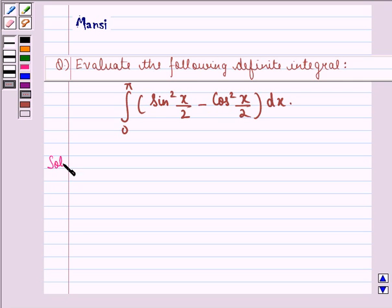So, let us start with the solution to this question. We see that the integral given to us is sin²(x/2) - cos²(x/2) dx where the limit goes from 0 to π.